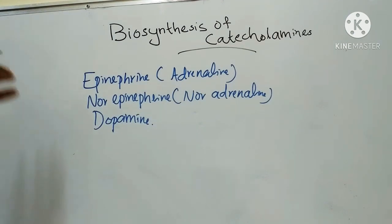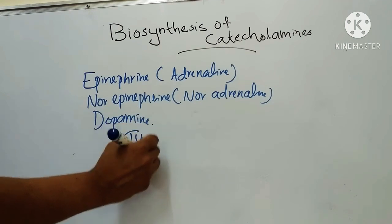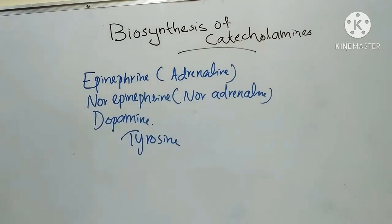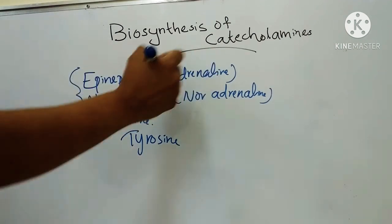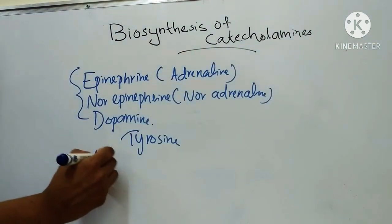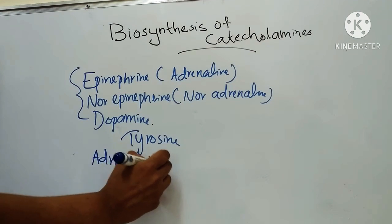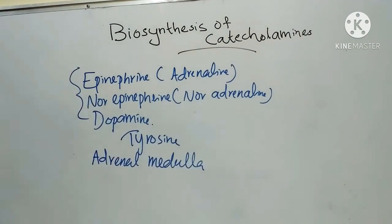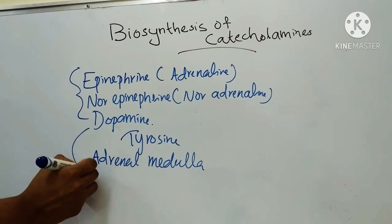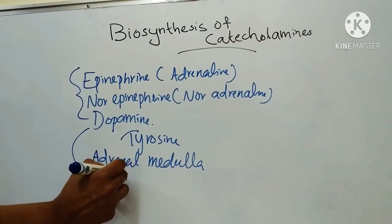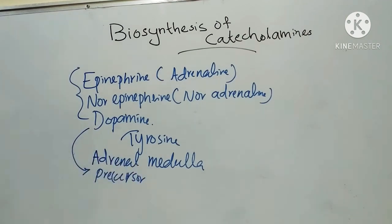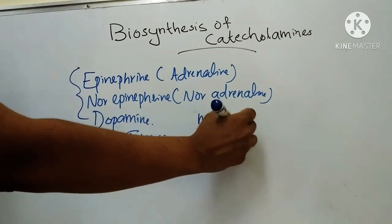All three catecholamines are synthesized from tyrosine. Epinephrine and norepinephrine are hormones produced by the adrenal medulla. Dopamine is the precursor. All three catecholamines also act as neurotransmitters.